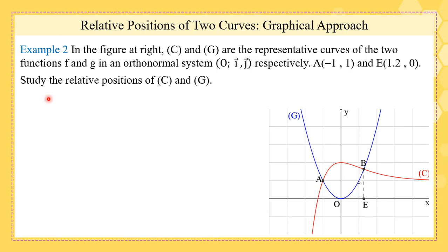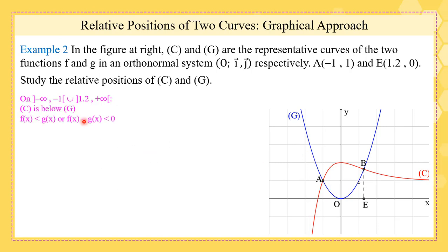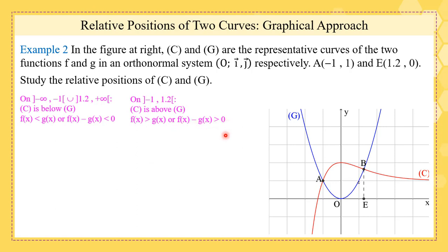The question is to study the relative positions of C and G. On the interval from minus infinity to minus 1, the red curve is below the blue curve, so C is below G — in other words, F of X is less than G of X. On the interval from minus 1 to 1.2, the red curve is above the blue curve, so C is above G, meaning F of X is greater than G of X.